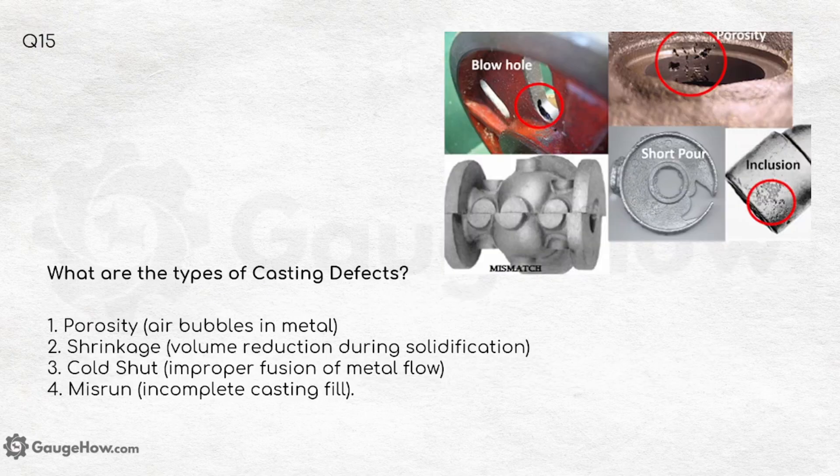What are the types of casting defects? Porosity — air bubbles in metal. Shrinkage — volume reduction during solidification. Cold shot — improper fusion of metal flow. And misrun — incomplete casting fill. The figure also shows blown hole, mismatch, short pour and inclusion defects.